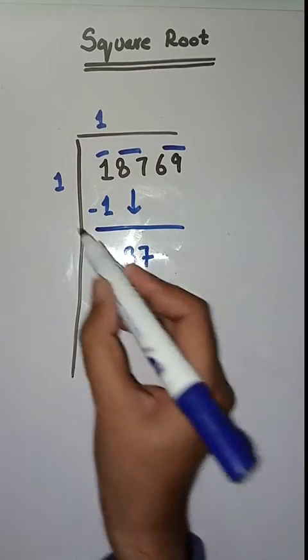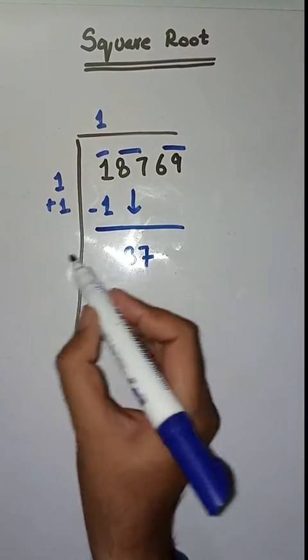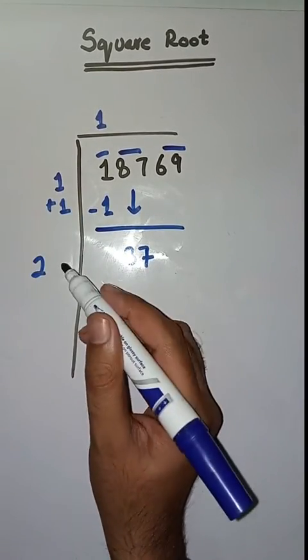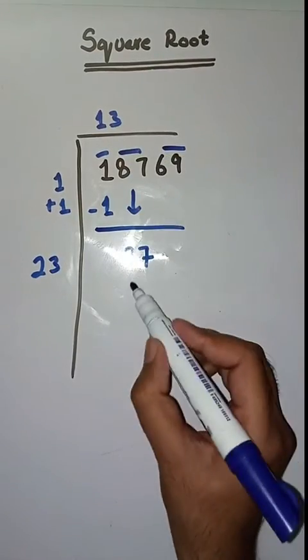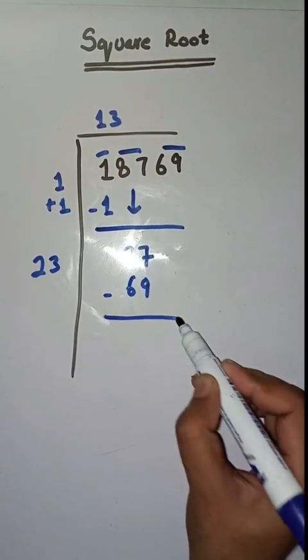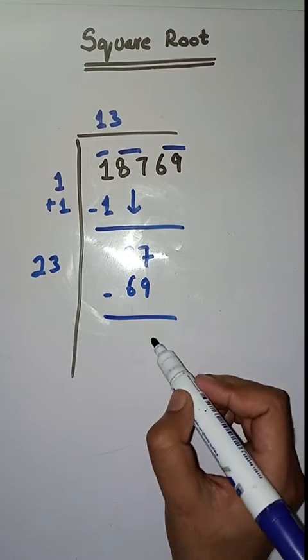Isko bhe hum necce liayenge. Yaha bhe hum karenge one plus one which is equal to 2. So we will take a number 3. Twenty-three three's are 69. Minus karenge, humare pas aajega 17. Minus 9 is equal to 8, 7 minus 6 is equal to 1.